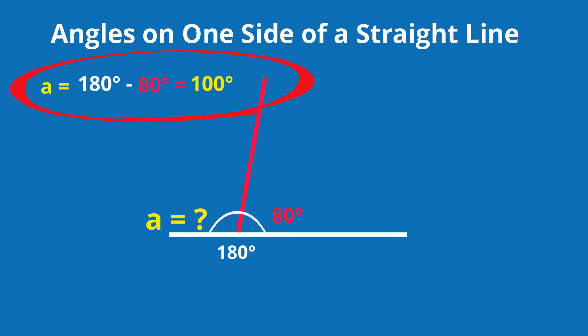Angle A equals 180 degrees minus 80, which equals 100.